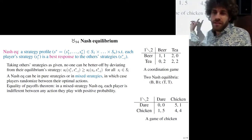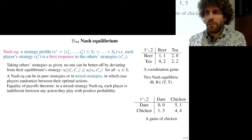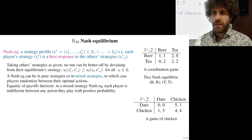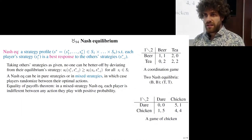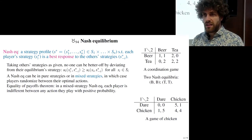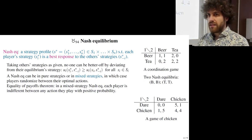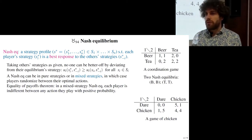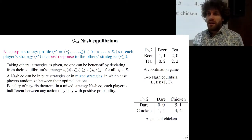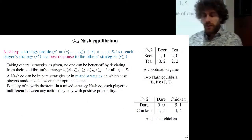What are the Nash equilibria of this game? It's the two dare-and-chicken combinations. If I know you will dare, then my best response is to chicken — otherwise we both die. And vice versa: if you know I will chicken, then you should dare. Your best response is to dare.